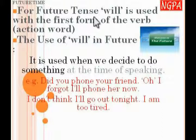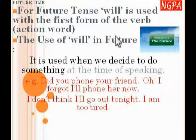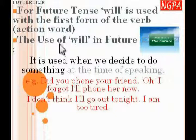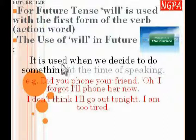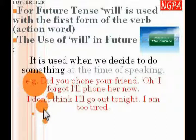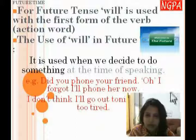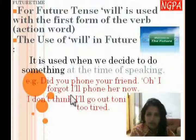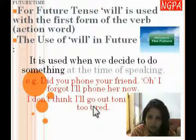Have a look at this slide. For future tense, 'will' is used with the first form of the verb, as the verb is an action word. 'I will do it,' 'I will go there.' This is used when we decide to do something at the time of speaking. For example: 'Did you phone your friend?' 'Oh, I forgot — I will phone her now.' Here you have decided to do something right now.